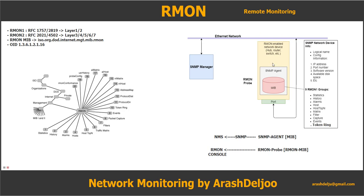In this picture, we have a network device — this is the managed device, which can be a hub, router, switch, or some other device. The port of this device is connected to the Ethernet network. Inside the device, we have a MIB, which can be an SNMP MIB or RMON MIB. In the RMON MIB, we have multiple groups of information that will be explained.